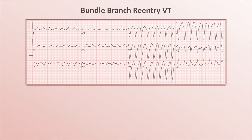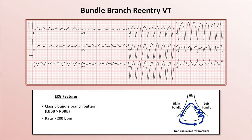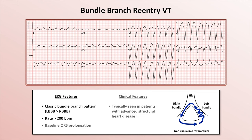Here is bundle branch reentry VT. In this rhythm, a reentrant circuit exists in which the right and left bundle branches each make up part of the reentry circuit. In its typical form, the impulse travels down the right bundle, across non-specialized myocardium, and slowly back up components of the left bundle — thus a left bundle branch block pattern is more common than right. The overall ventricular rate is very fast, usually over 200 beats per minute. Bundle branch reentry is typically seen in patients with advanced structural heart disease who have baseline QRS prolongation. Related to that and the fast rate, this rhythm often causes syncope and hemodynamic instability, and it has a prognosis similar to scar-based VT rather than the idiopathic VTs.